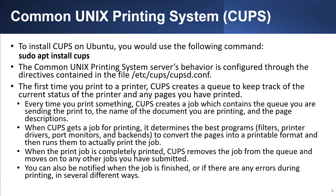When CUPS gets a job for printing, it determines the best program, filters, print drivers, port monitors, and backends to convert the pages into a printable format and then runs them to actually print the job. When the print job is completely printed, CUPS removes the job from the queue and moves on to any other jobs you have submitted. You can also be notified when the job is finished or if there are any errors during printing in several different ways.